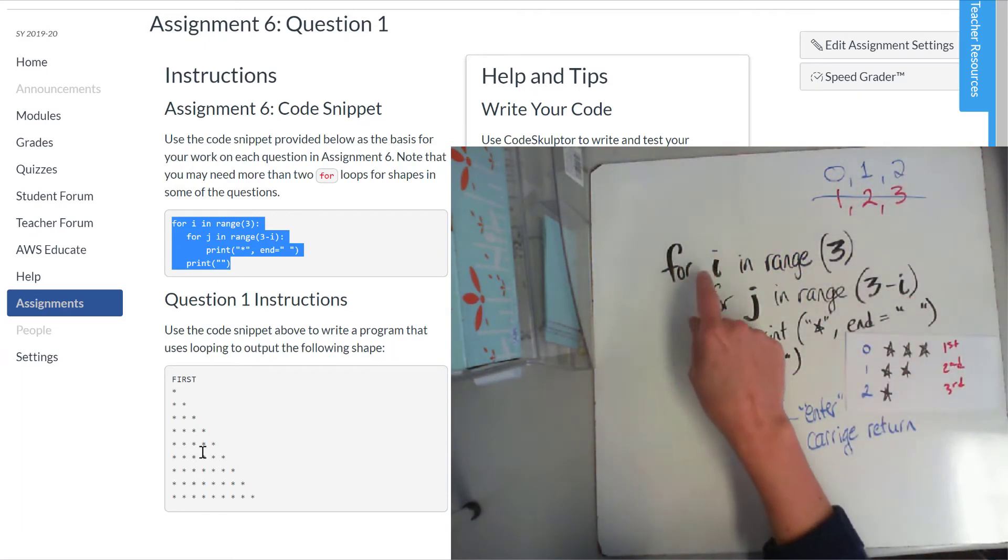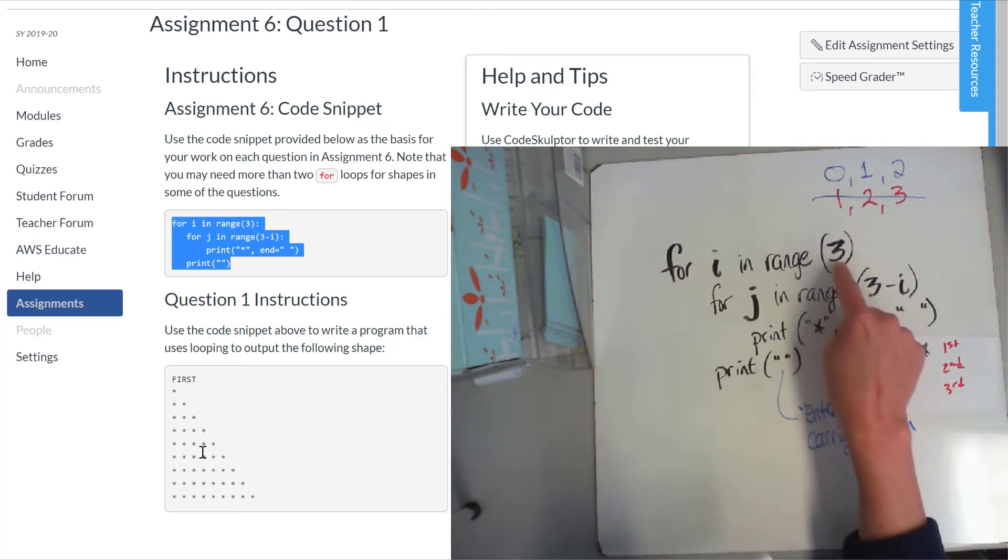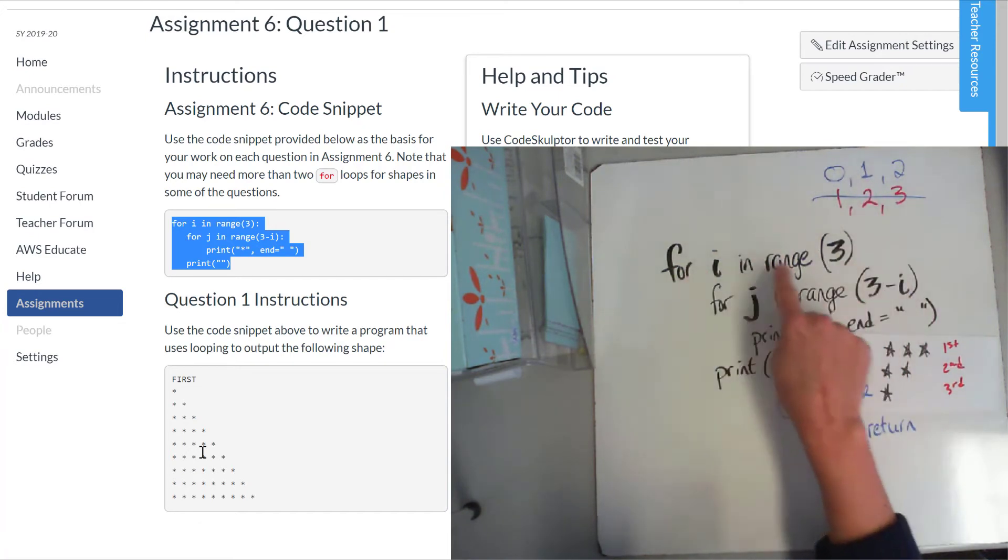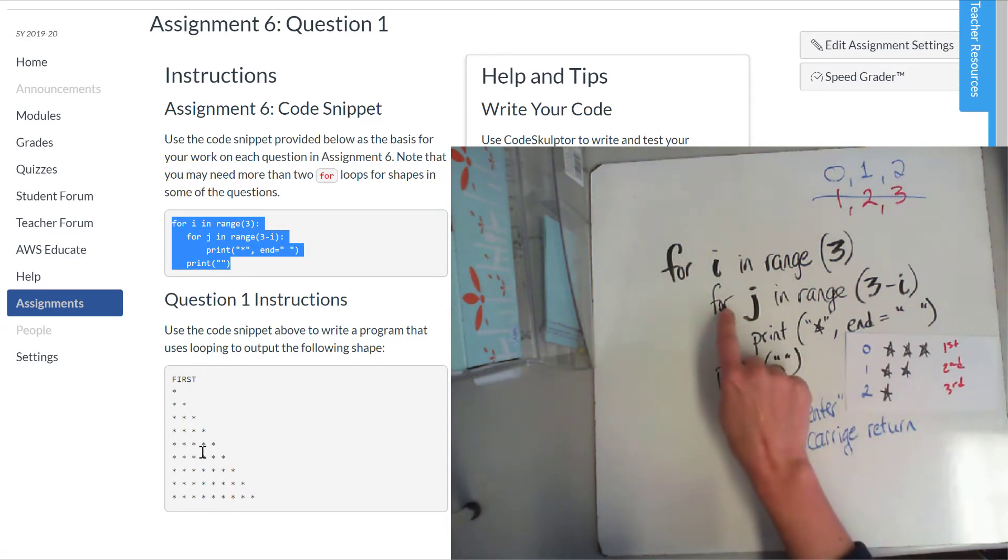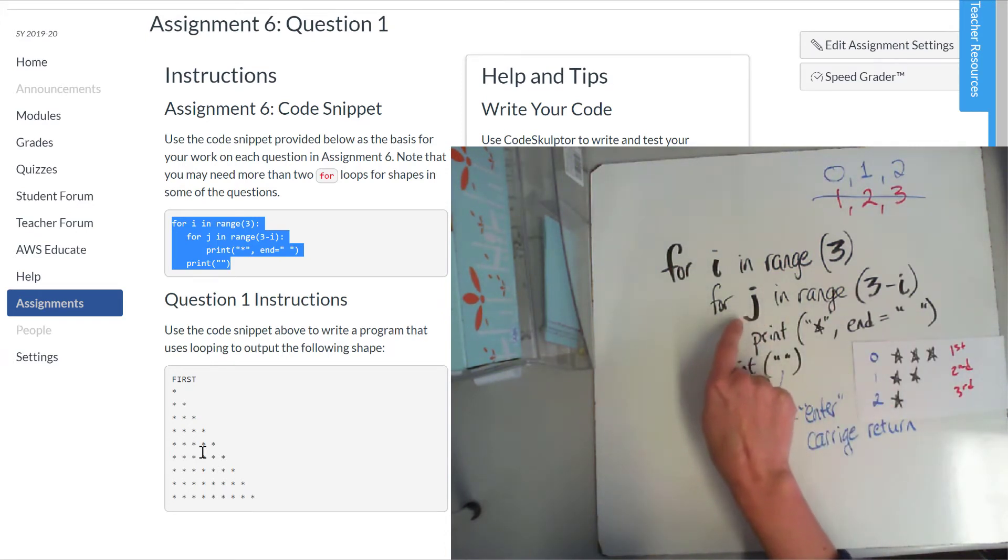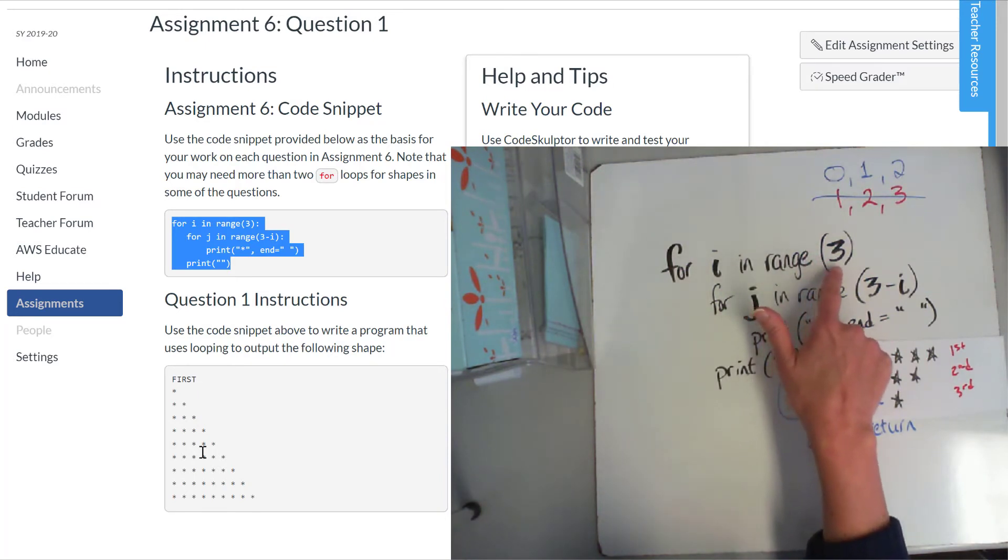So now here we go. i equals two, because when i equals three, we're not going to run the program again. So now I've done line zero, line one, and now I'm on line two. On that line number two, I'm going to do this thing three minus two times. Well, three minus two is one. So I'm going to print star and then a space, and then I'm done. I jump out of this j loop into this one, which is the carriage return, which is the end of my i loop. And now it goes back again and checks. All right, i is now three. That's a three. That's where I'm going to stop.